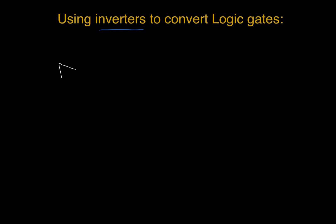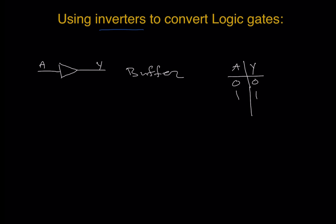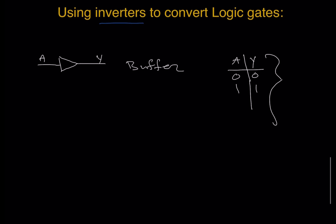We call this first device a buffer. For a buffer, input A, output Y — if input is zero, output is zero; if input is one, output is one. It just buffers up the input and translates it straight to the output. An inverter inverts the signal. The symbol is the same as the buffer but with a dot — a bubble — at the end.